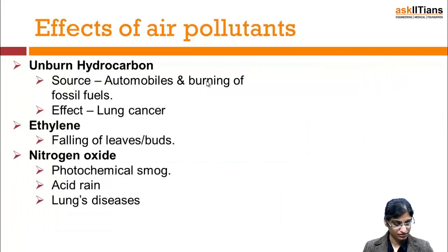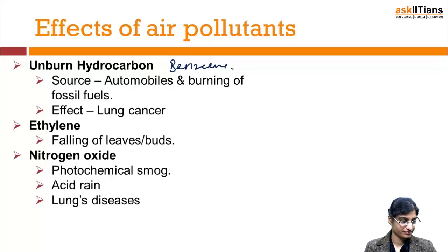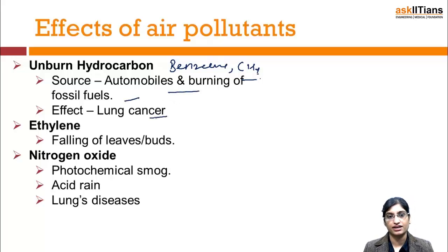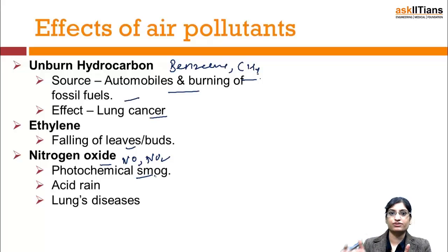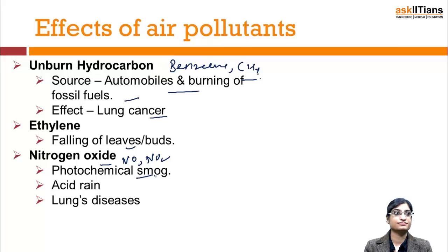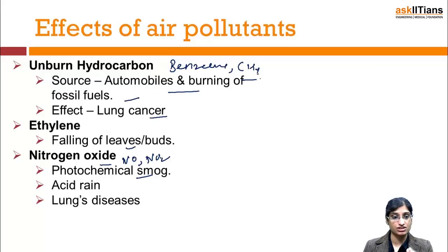The next pollutants are unburned hydrocarbons — examples include benzopyrene, benzene, and methane. They are released from automobiles and burning of fossil fuel, and cause lung cancer. Next is ethylene, which causes defoliation — falling of leaves and buds. Nitrogen oxides, present as NO and NO2 forms, cause photochemical smog, acid rain, and lung diseases such as emphysema, bronchitis, and lung cancer.